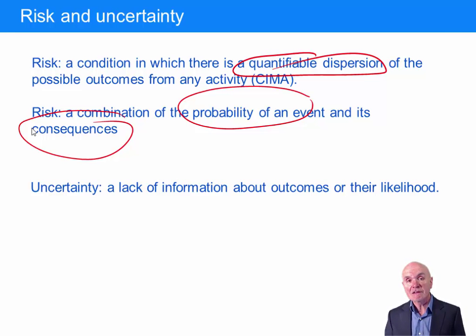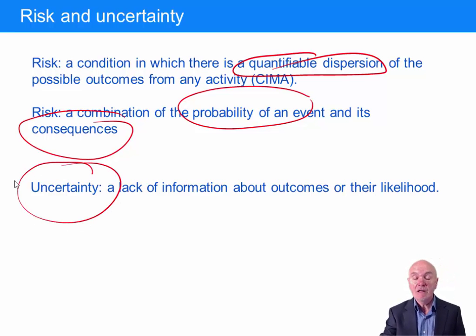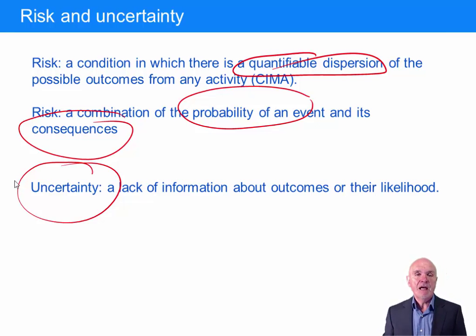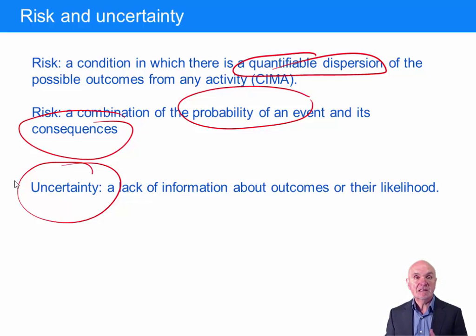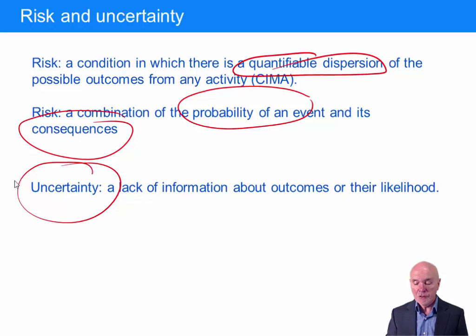If you don't have this kind of numerical, quantified information, then you're dealing with a situation of uncertainty, and you're much more in the dark when trying to assess the damage that might be done. You have not been able to estimate the probability of this bad — or indeed good — thing actually happening. It tends to fall back on how you feel, a much more subjective reaction to uncertainty. But with risk, you can put some figures on it.